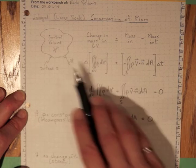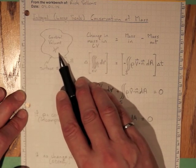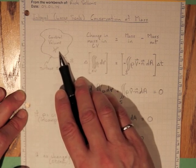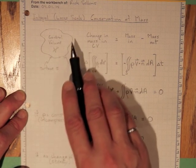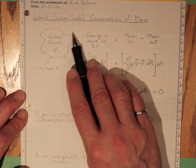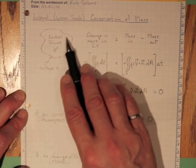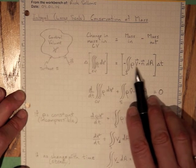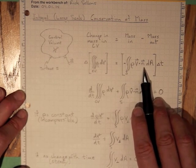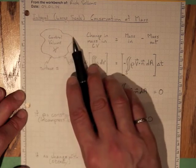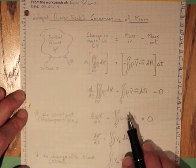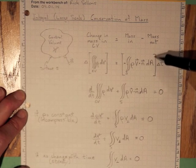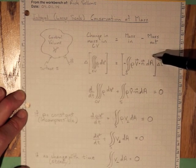And the V dot n will be negative anywhere that the flow velocity is pointing in across the surface and positive anywhere that the flow velocity is pointing out across the surface. So this will keep track of which direction the flow is going across the boundary surface of the control volume.